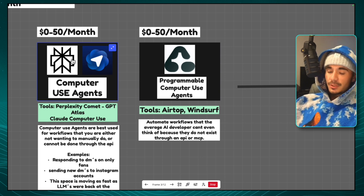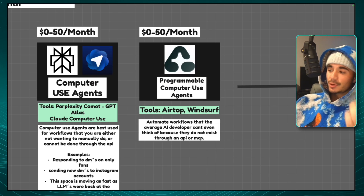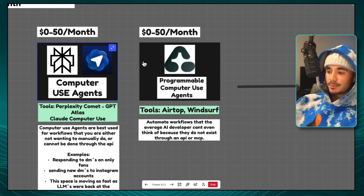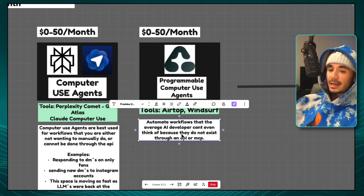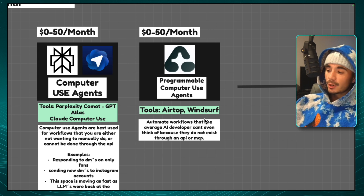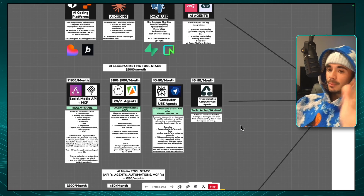This leads to programmable computer use agents. Tools like Perplexity's Comet or ChatGPT's Atlas are just normal browsers — not programmable and you can't set things on a schedule. But Airtop is the same thing except accessible via API. I showed a quick N8N tutorial on making a programmable computer use agent, and the beautiful thing is you can create workflows that no one has ever seen before because they weren't accessible through an API or MCP server. In total, the AI social media marketing tool stack costs $2,000 a month.